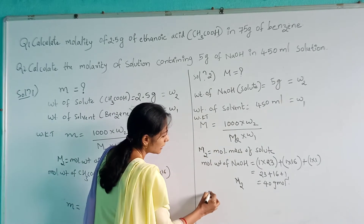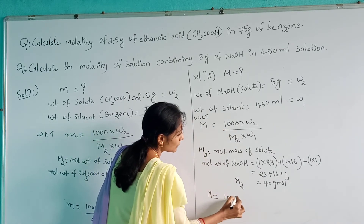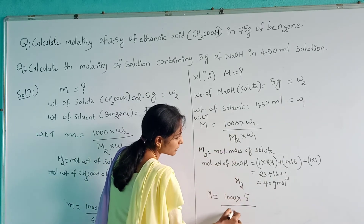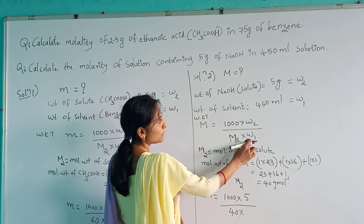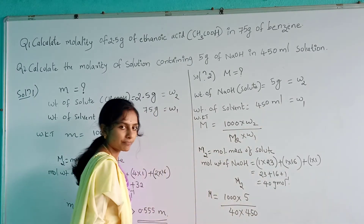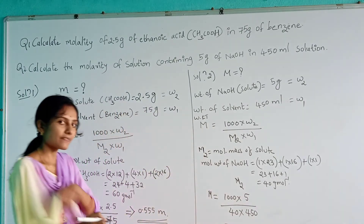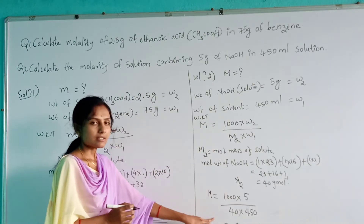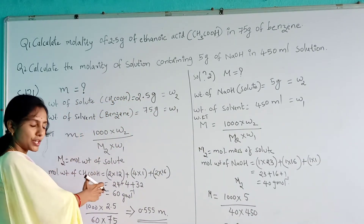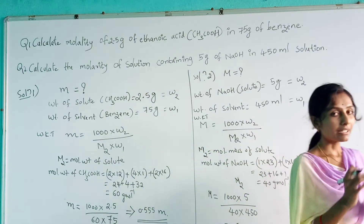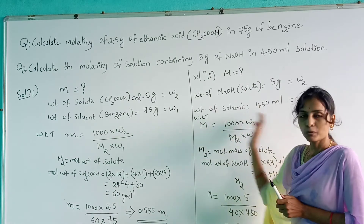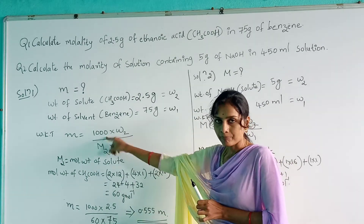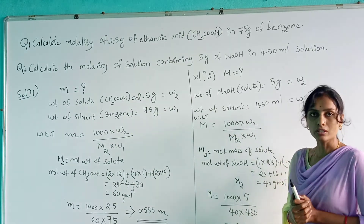Now we put the values in and get the answer. M = 1000 × W₂ / (M₂ × W₁) = 1000 × 5 / (40 × 450). The value will be around 0.277 mol/L. This is the solution for question number 2. Question 1 and question 2 are similar in the sense that both formulas are the same — the difference is that in molality 1000 refers to grams (kg), and in molarity 1000 refers to mL (liters).